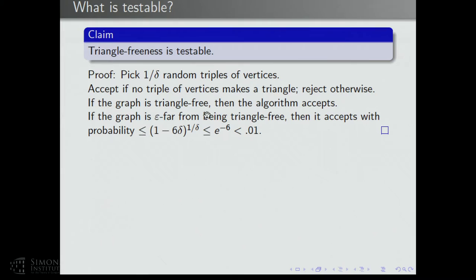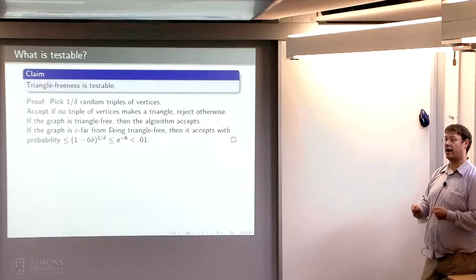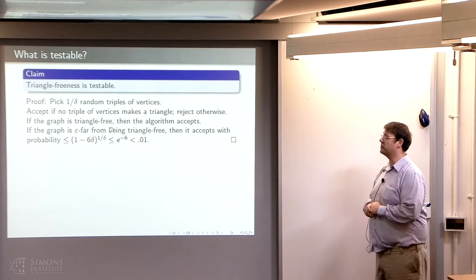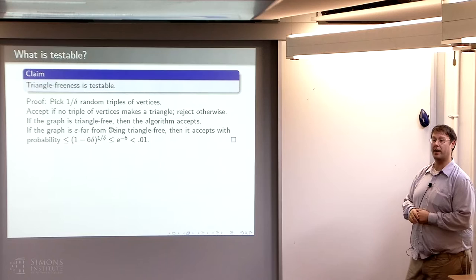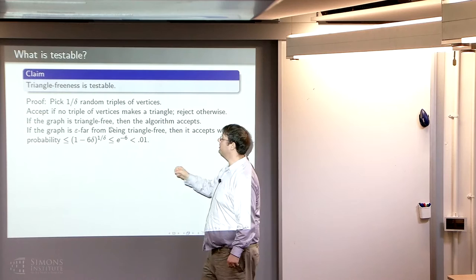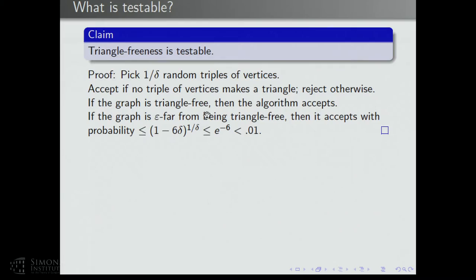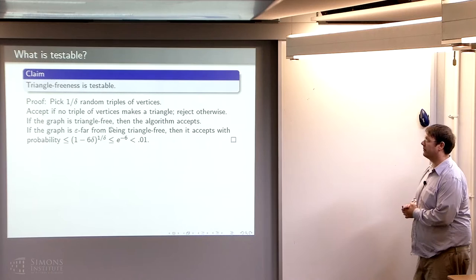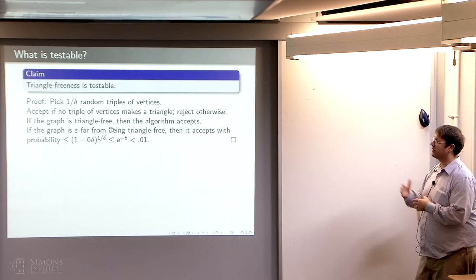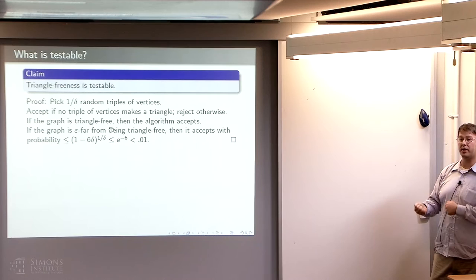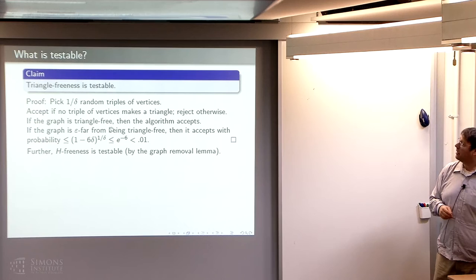What if your graph is epsilon far from being triangle-free? That means you need to delete at least epsilon n-squared edges to delete all triangles. By the triangle removal lemma, your graph has at least delta n-cubed triangles. When you look at a particular triple, the probability it is not a triangle is at most 1 minus 6 delta. You sample triples uniformly and independently, so when you've sampled 1 over delta of them and raise this to the 1 over delta power, simple analysis shows the acceptance probability is less than 1%. So you'll very likely reject.